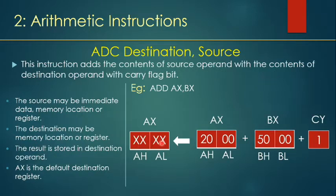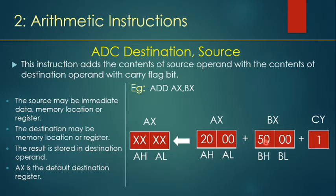Similarly, ADC (Add with Carry) uses the format: ADC destination, source. Here, destination plus source plus carry is computed. In this example, 2000 plus 5000 plus carry bit 1 gives 7001, which will be stored in the AX register.